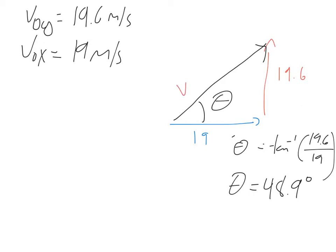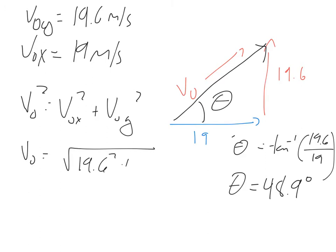Now, the magnitude of the kicked velocity, V0, is going to be the Pythagorean sum of my y component and my x component. That is, V0 squared equals V0x squared plus V0y squared. Or, V0 equals the square root of those things. So, 19.6 squared plus 19 squared. V0 comes out to, turning to the calculator, 19.6 squared plus 19 squared, 27.29, 27.3 meters per second.